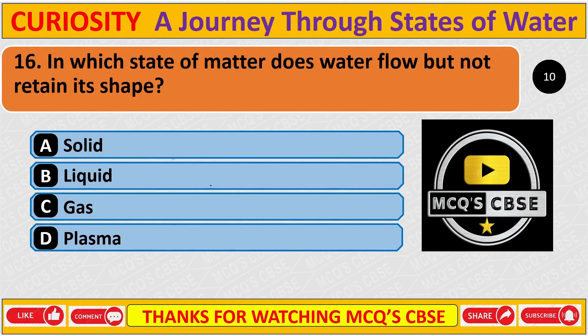In which state of matter does water flow but not retain its shape? The correct answer is B: Liquid.